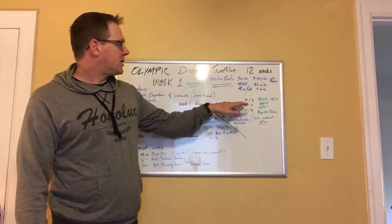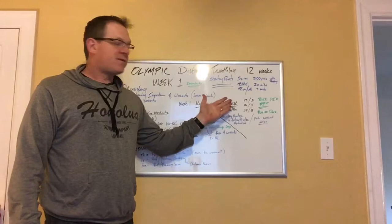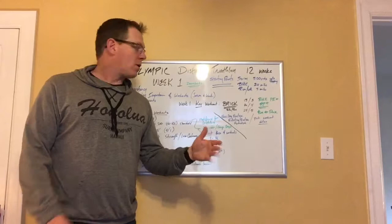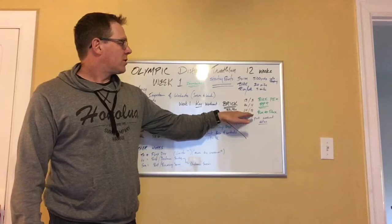So if you only did one workout the whole week, that's the workout you want to do. And you'll see that I have on there, I gave three different possibilities. So you can do a 15 mile bike ride, followed by a three mile run, a 20 mile bike ride, followed by a four mile run, or a 25 mile bike ride, followed by a five mile run.